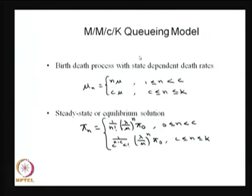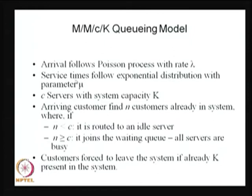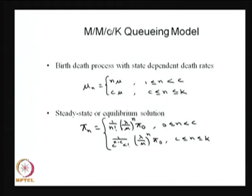The underlying stochastic process here is the number of customers in the system at any time T. This stochastic process is a continuous time Markov chain because inter-arrivals are exponentially distributed, service by each server is exponentially distributed, and all are independent. At any time only one forward or one backward move occurs, so it is a birth-death process. The birth rates are all lambda because it is an infinite source population, whereas the death rates are state dependent.